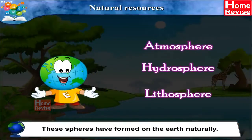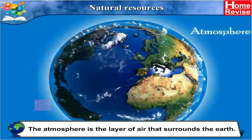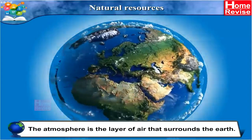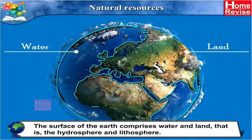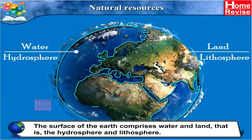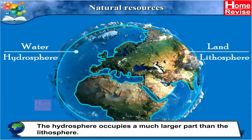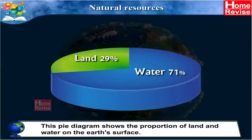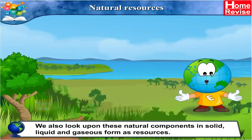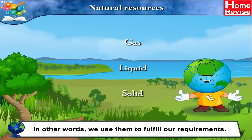These spheres have formed on the earth naturally. The atmosphere is the layer of air that surrounds the earth. The surface of the earth comprises water and land, i.e. the hydrosphere and lithosphere. The hydrosphere occupies a much larger part than the lithosphere. This pie diagram shows the proportion of land and water on the earth's surface. We also look upon these natural components in solid, liquid and gaseous form as resources — we use them to fulfil our requirements.